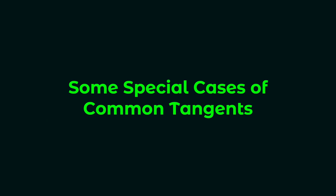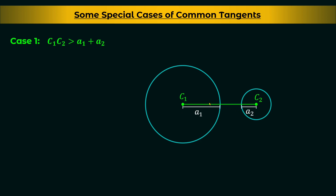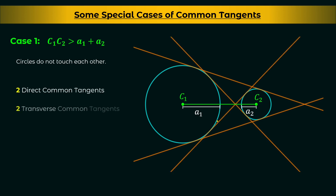Now let's go to the next topic: some special cases of common tangents. Consider two circles with centers C1 and C2. In case one, C1C2 > A1 + A2 — the distance between the centers is more than the sum of the radii. In this case the circles do not touch each other; the second circle is outside the first circle. You can draw two direct common tangents and two transverse common tangents. This is the general case.